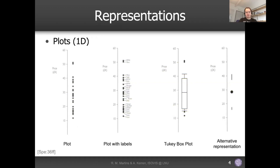For 1D plots, the most common is probably the dot plot — also known as a strip plot — where you put a bunch of dots along one axis, with each dot placed at the position corresponding to its value. And the box plot is another very common way to represent univariate data, especially in scientific reporting, because it encodes extra statistical information.